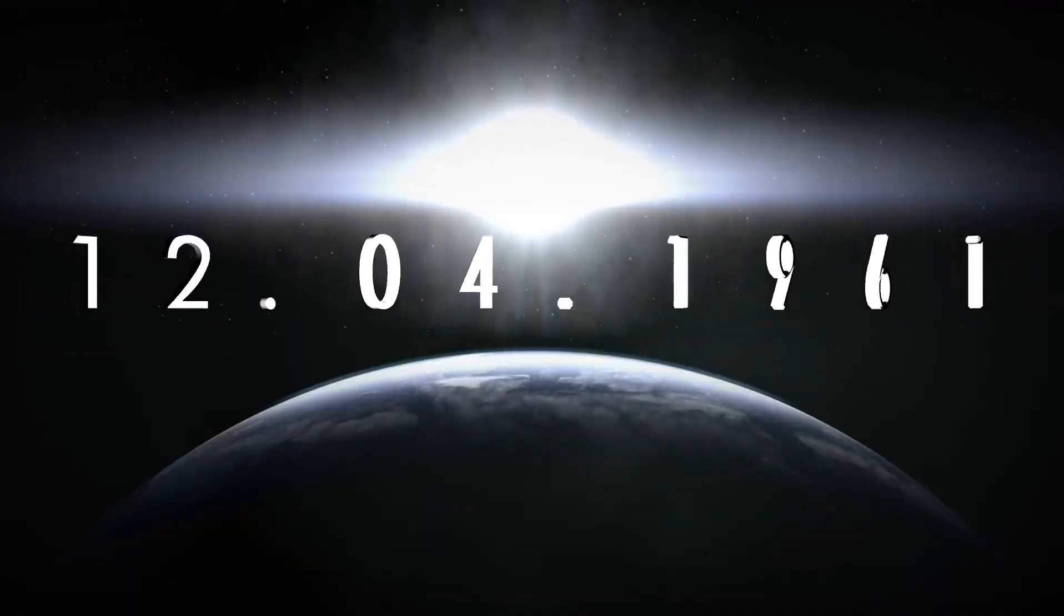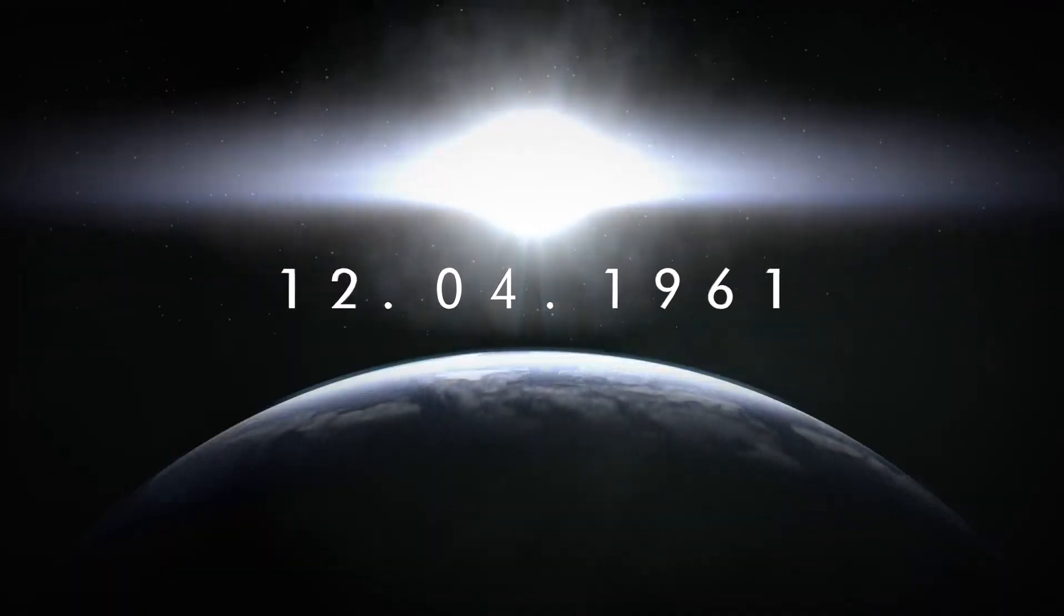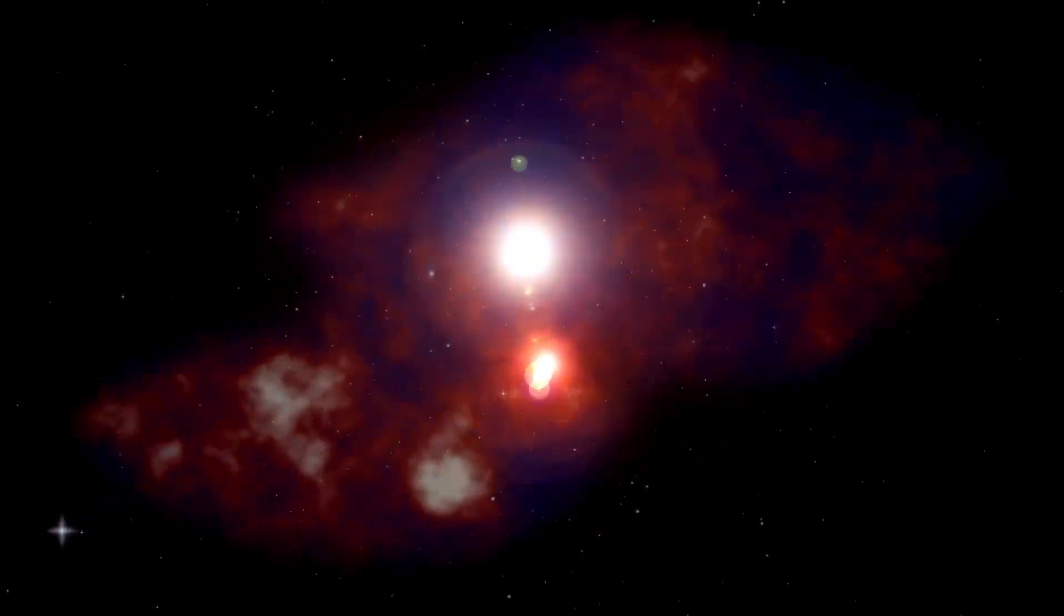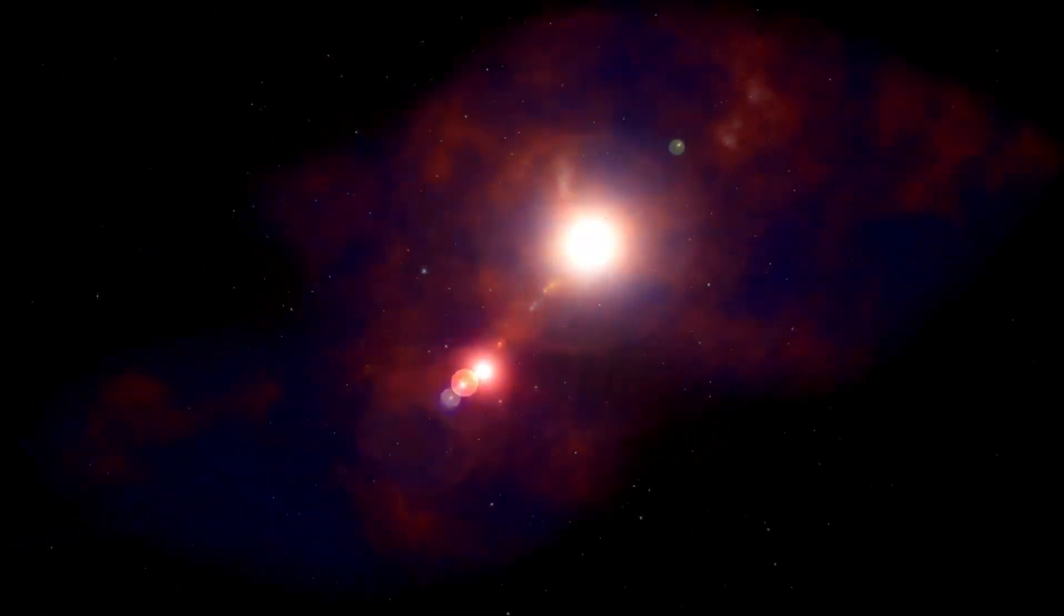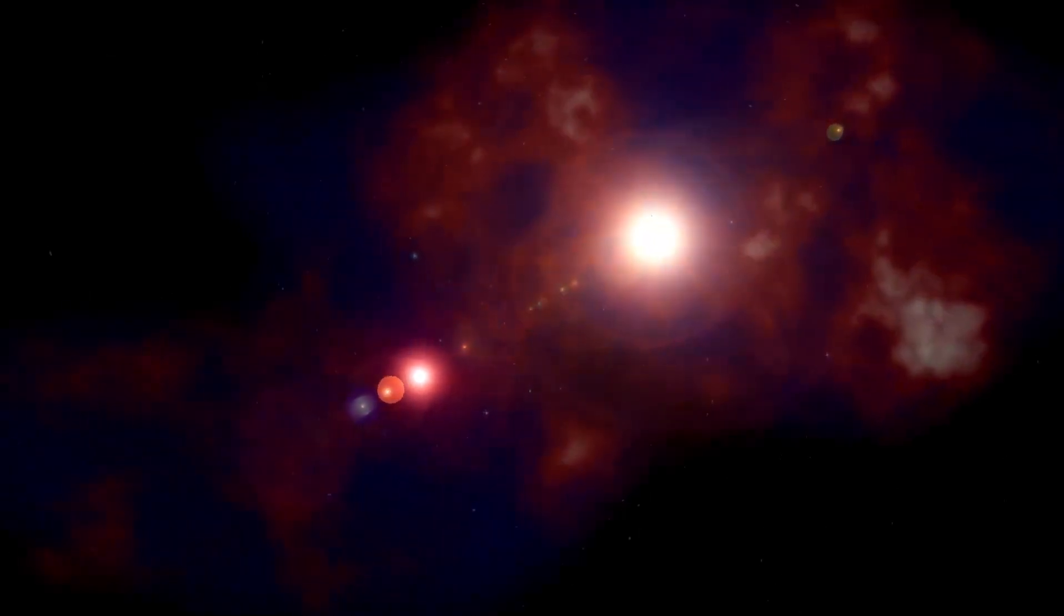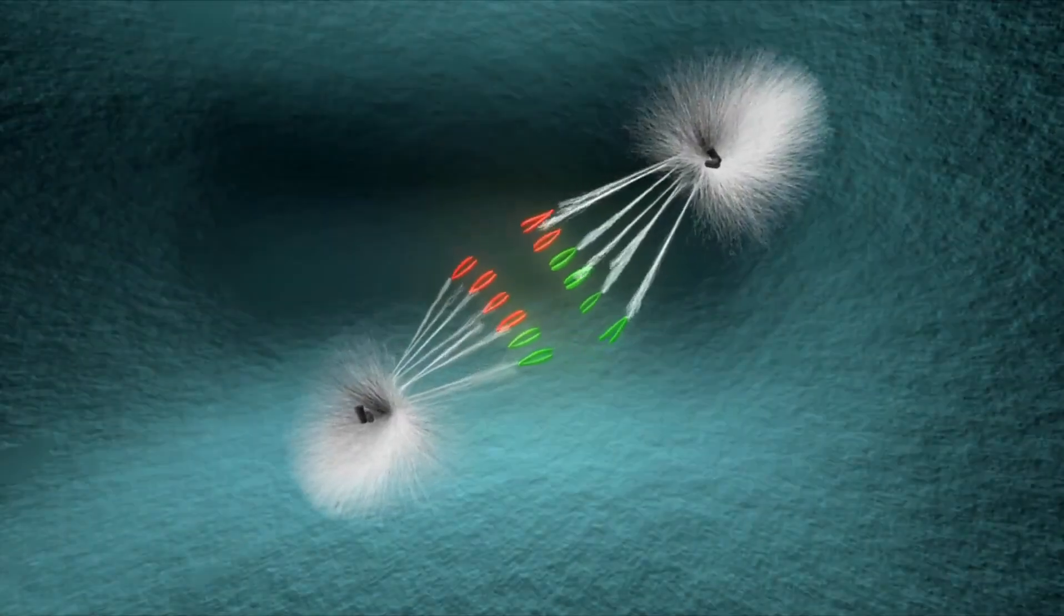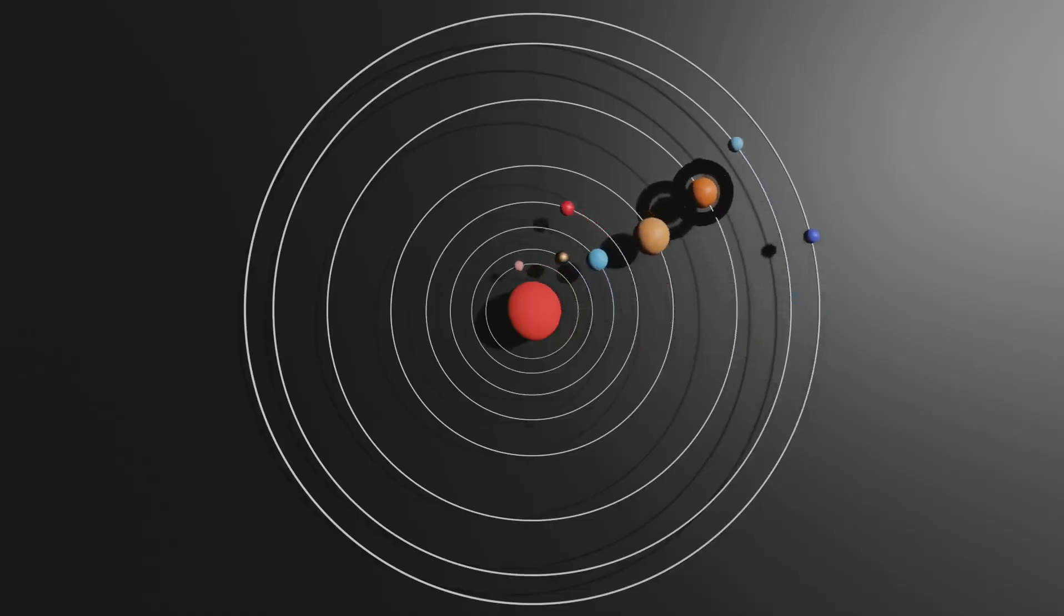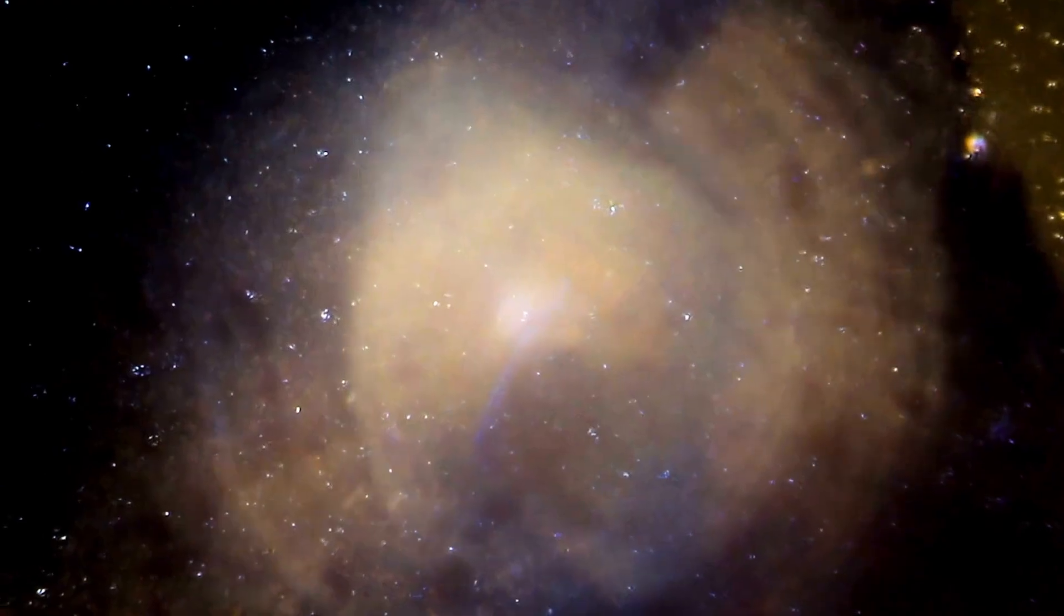The first direct image of an exoplanet was captured in September of last year. This planet, identified in 2017 and named HIP 65426b, was observed using the Webb Telescope's coronagraphs, which block out the overwhelming light from the host star. The planet is a massive gas giant, nearly 12 times the size of Jupiter, orbiting its star at a distance 100 times greater than that between Earth and the Sun.